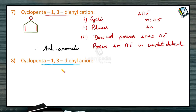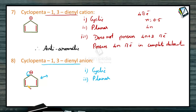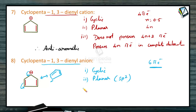The last example: cyclopenta-1,3-dienyl anion. It is cyclic. It is planar because the double bonds are in conjugation with the lone pair of electrons on the negatively charged carbon, which is also involved in pi bond formation. Due to this complete delocalization, all carbon atoms are sp2 hybridized and the ion is planar. As the lone pair is also involved in delocalization, there are totally 6 pi electrons — satisfying Huckel's rule of 4n+2 pi electrons. So this ion is aromatic in nature.